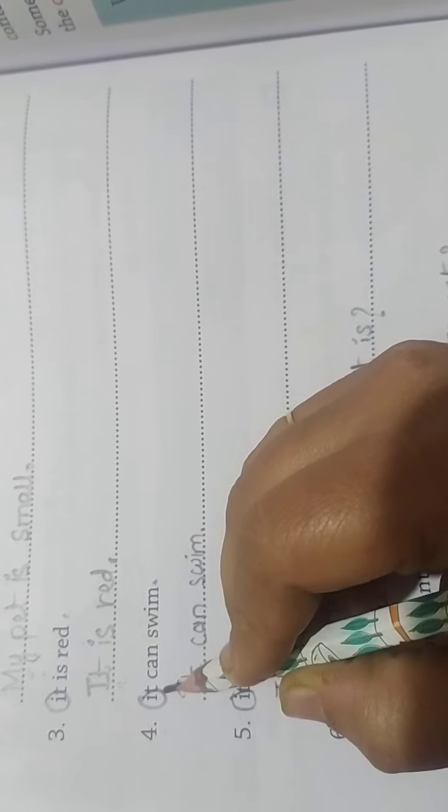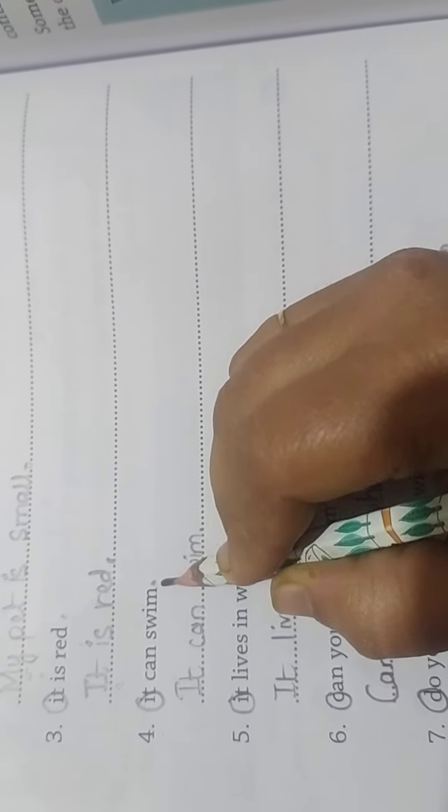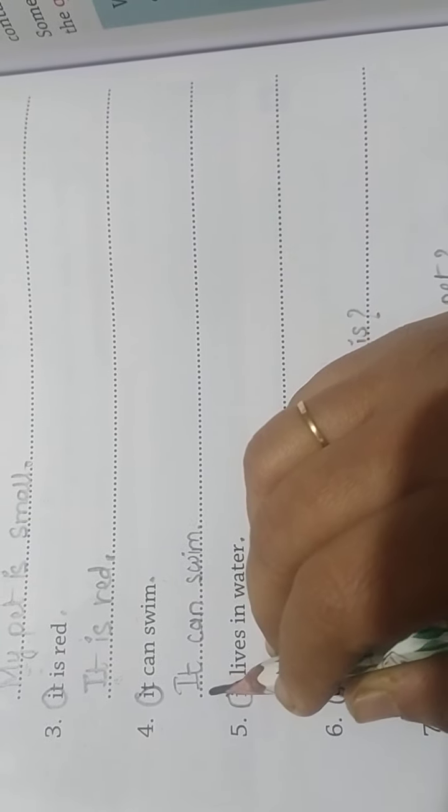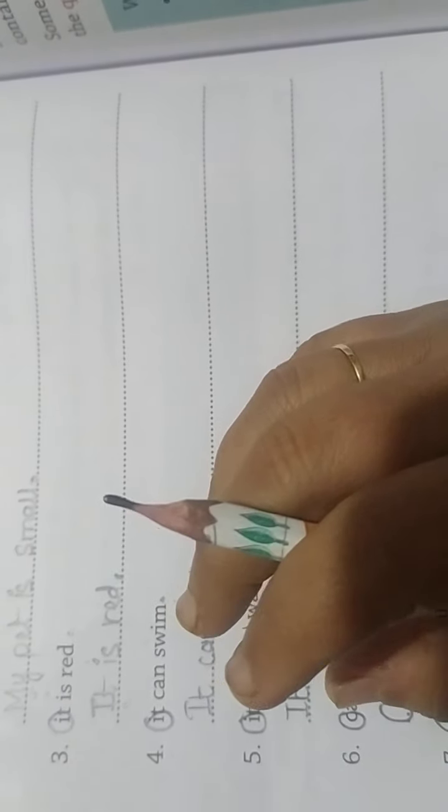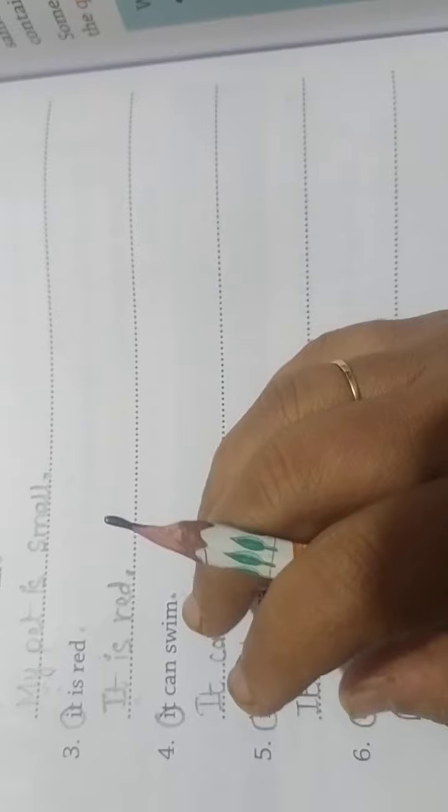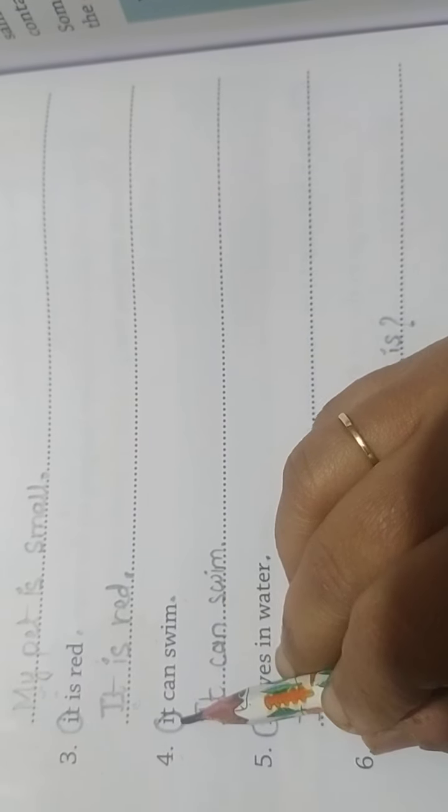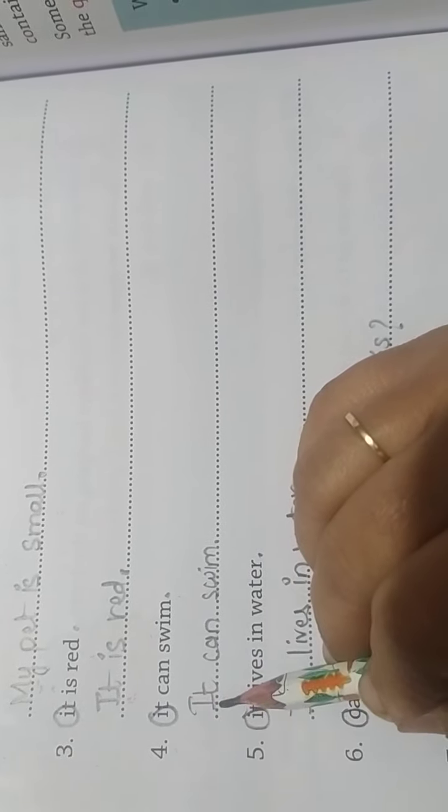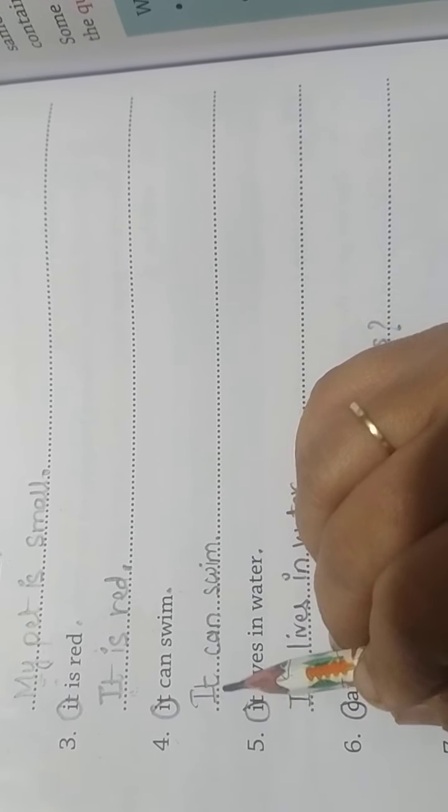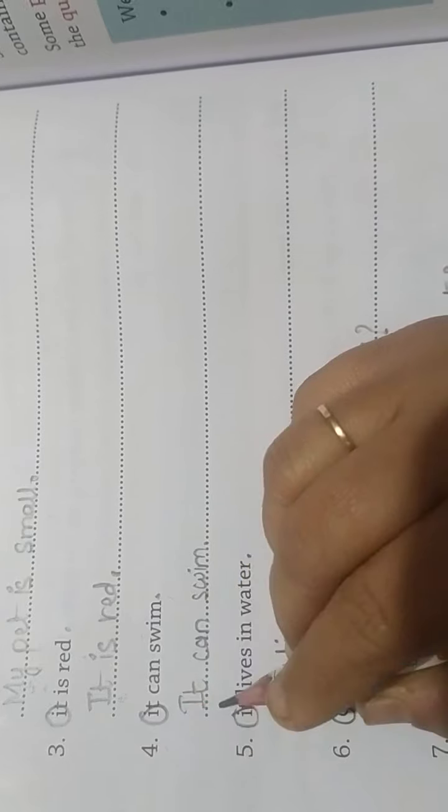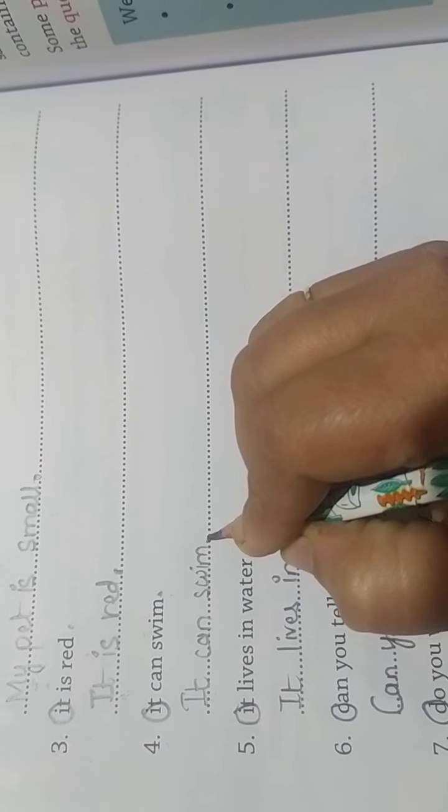Number 4: It can swim. It can swim. So I capital - sentence begins. So it can swim. Last, full stop.